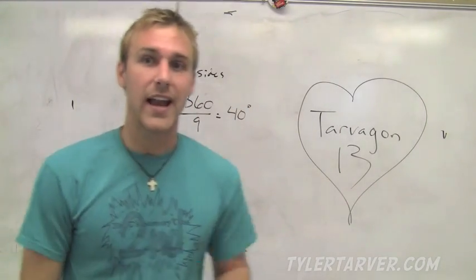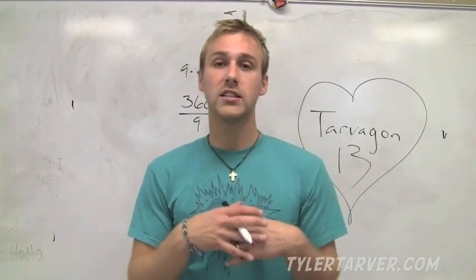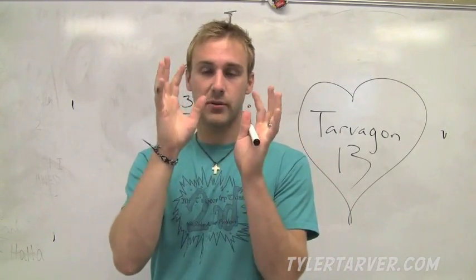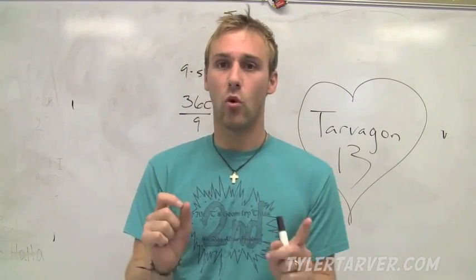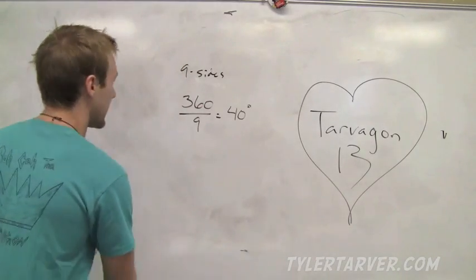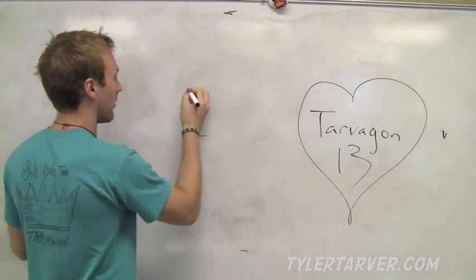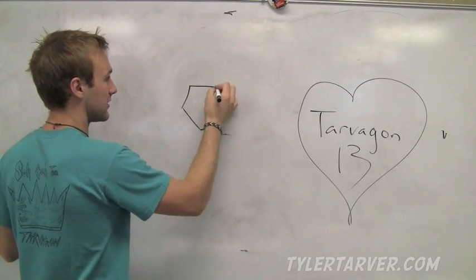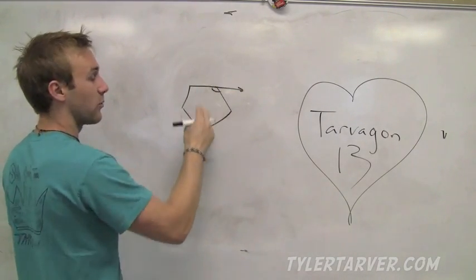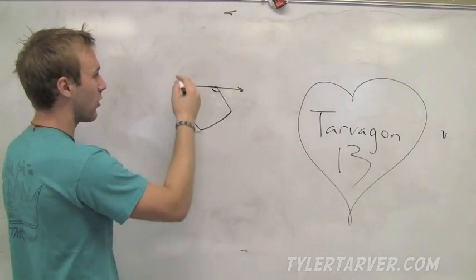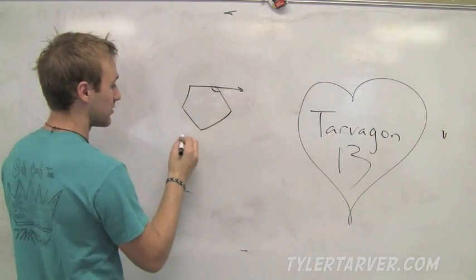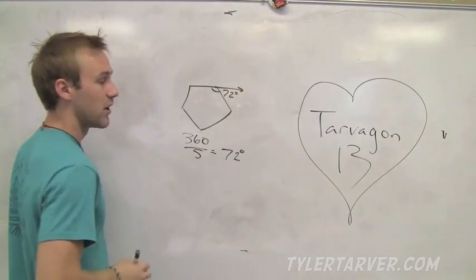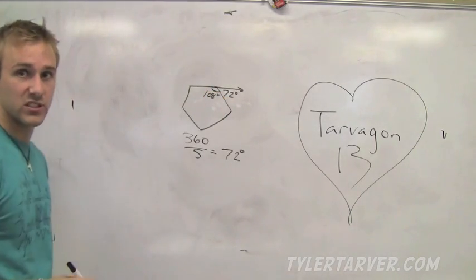Also, what you'll see is, the question will ask, what is the measure of each exterior angle in a regular anything? Let's say we've got a regular nonagon, which means all the sides are equal and it's got nine sides. So there's nine angles inside and there's also nine angles on the outside. What do we know that the exterior angles always equal? 360. To find one of those angles, I divide it by nine, I get 40. So 40 degrees. That's what one of the exterior angles equals.